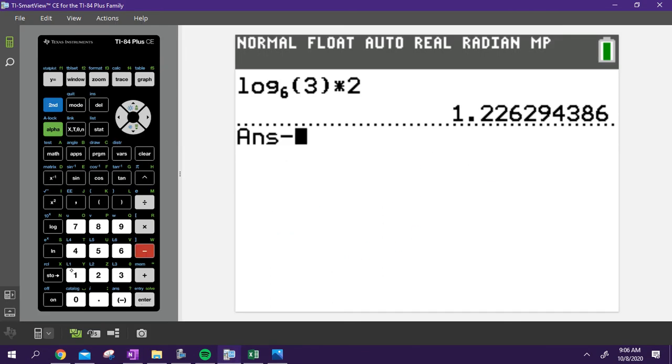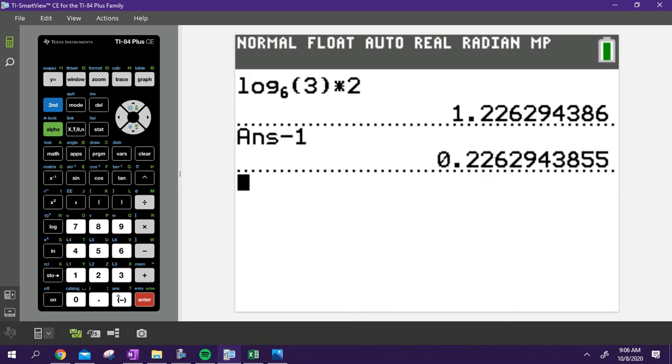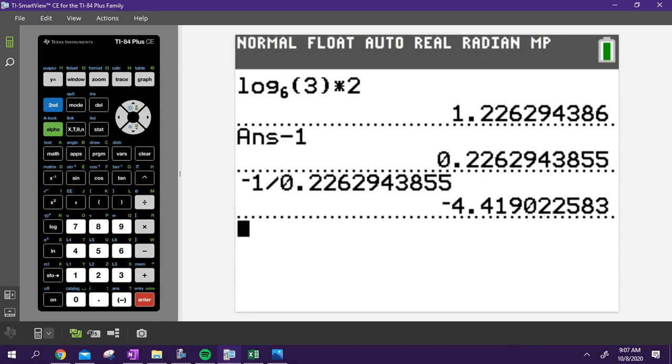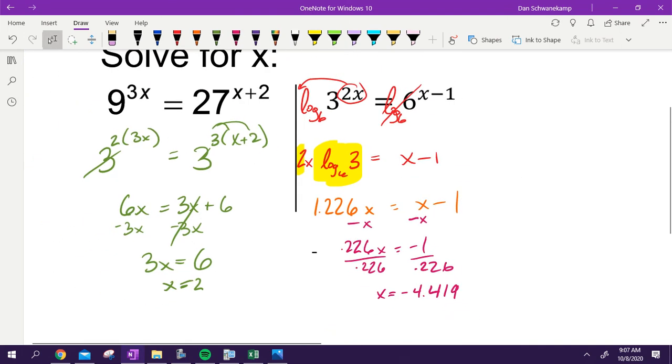So I'm taking minus one, I get the 0.226x. And then I want to get x by itself, so I'm going to divide by whatever that number is, divide by 0.226. So in my calculator, I'm taking negative one divided by 0.226, boom, Enter. That is what I'm looking for: negative 4.419. Questions on that one?